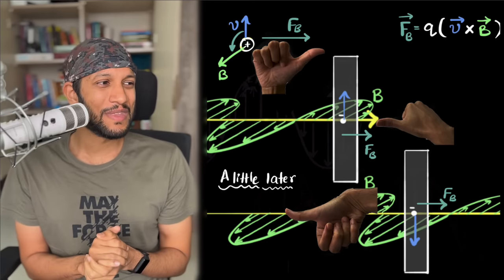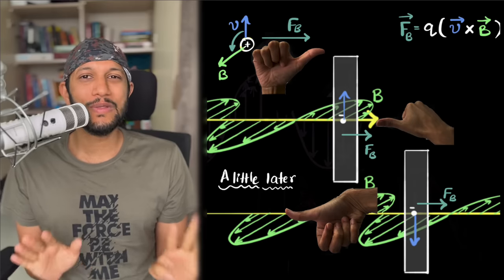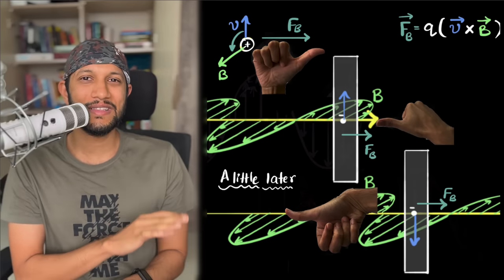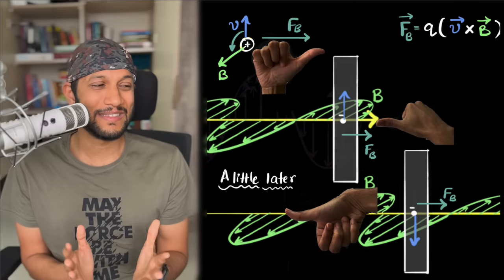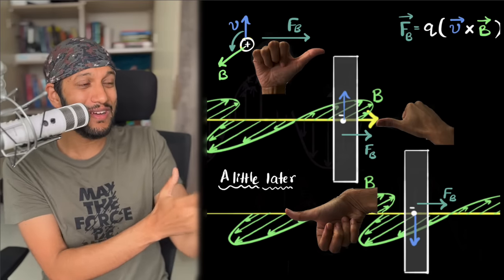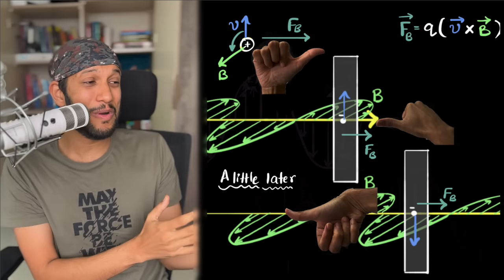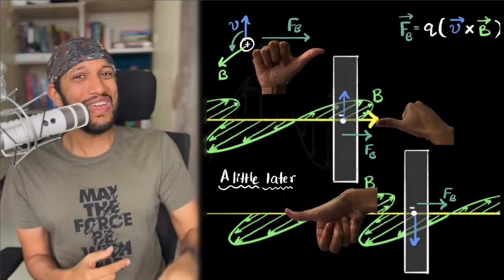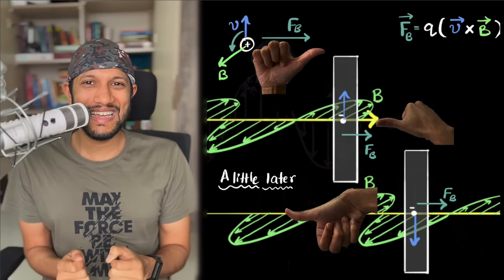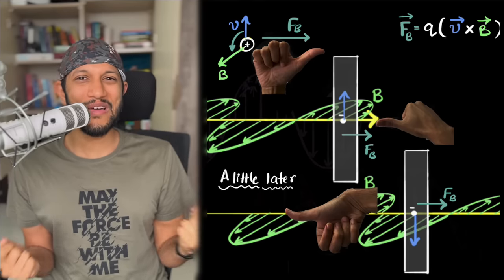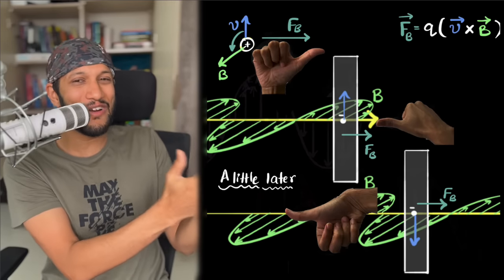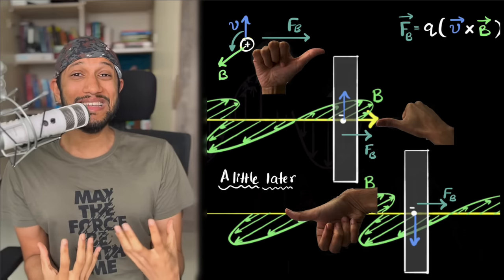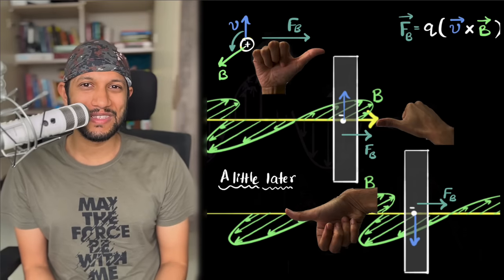You can see right in front of your eyes what causes light's momentum — it's the magnetic field. This is amazing, because usually when we learn about electromagnetic waves we mostly ignore the magnetic fields — in interference, polarization, or anything else. But here, the magnetic field makes a comeback. It's the magnetic field that gives light its momentum. Who would have thought? It was right in front of our eyes. I was pleasantly surprised when I learned this for the first time.